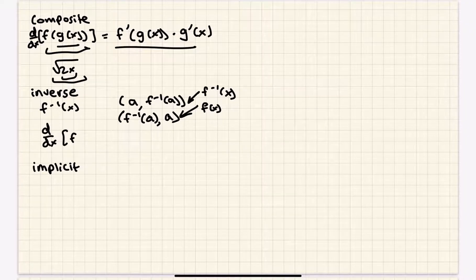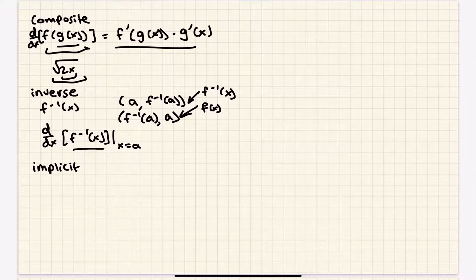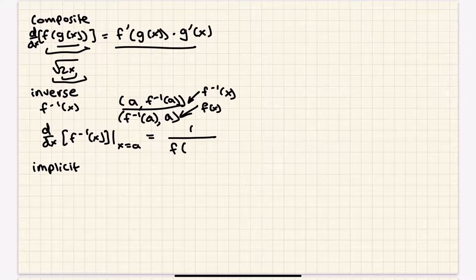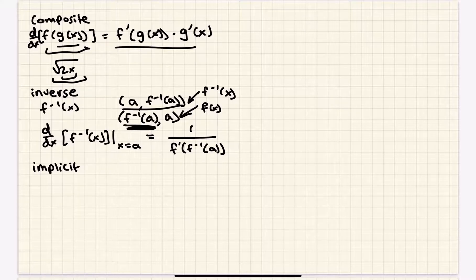So how do you take the derivative of the inverse function? This rule only applies to the derivative at a certain point — in other words, the tangent line at that point. Using the point a comma f inverse of a, the result is going to be 1 over f prime of f inverse of a. You take that f inverse of a value and plug it into the derivative of f. This gives you the slope of the tangent line at that point.